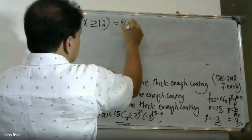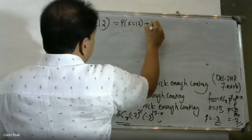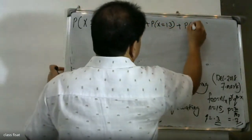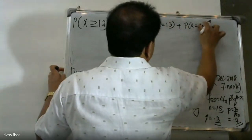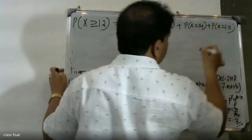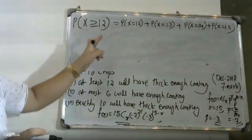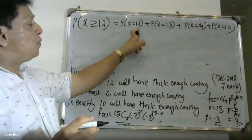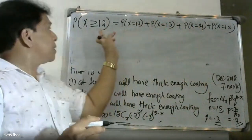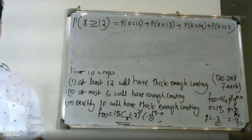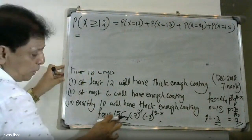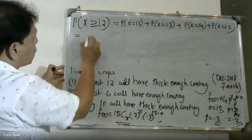The probability that X is greater than or equal to 12 equals the probability X equals 12, plus the probability X equals 13, plus the probability X equals 14, plus the probability X equals 15. So we have four terms to calculate for this part.